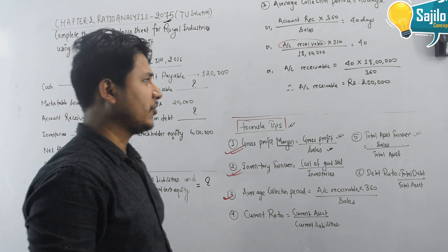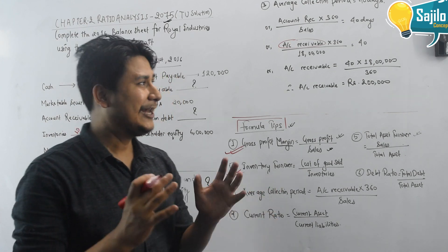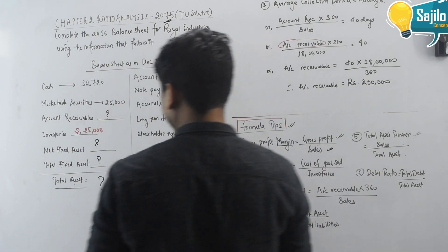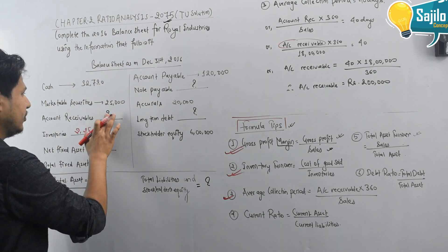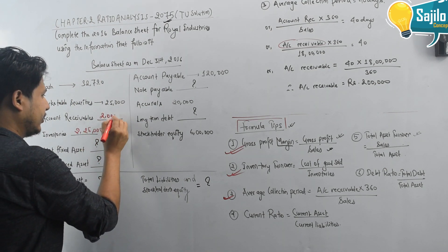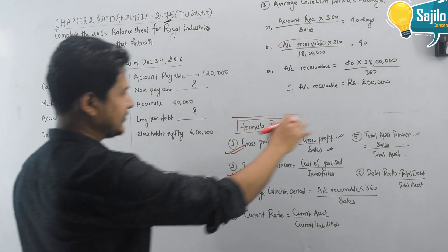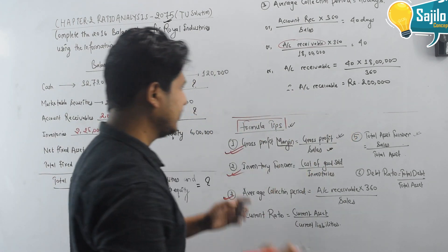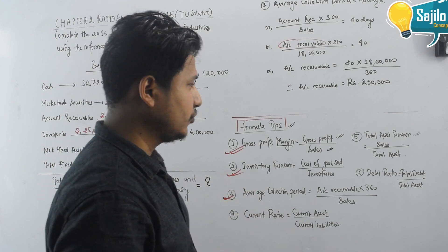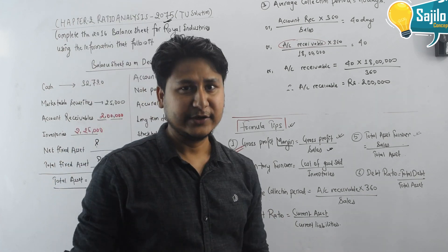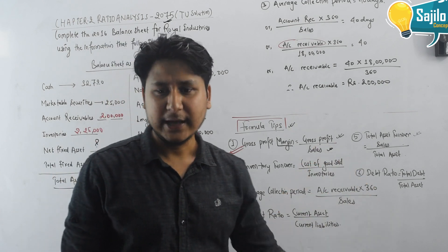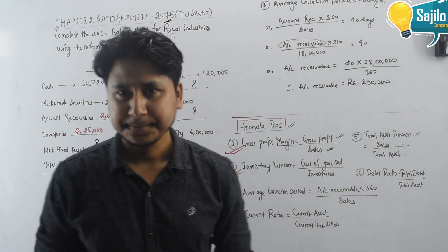Account receivable equals average collection period multiplied by sales divided by 360. So account receivable equals 40 × 18,00,000 divided by 360, which equals $2,00,000. Hence, the required account receivable amount is 2 lakhs.